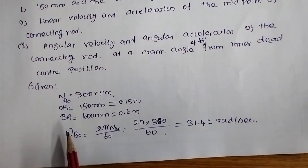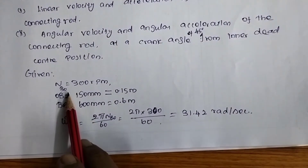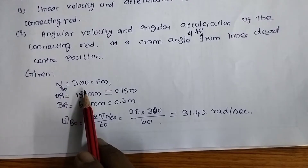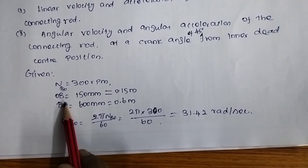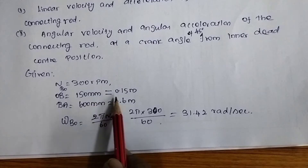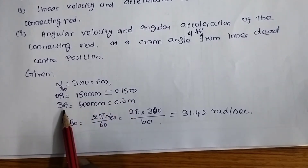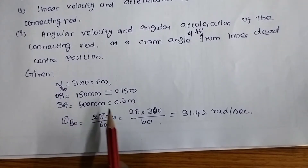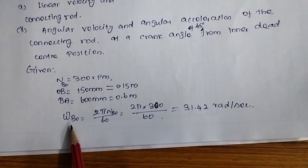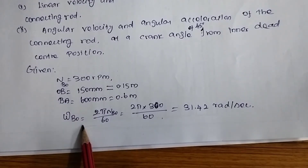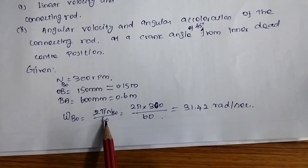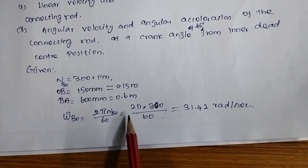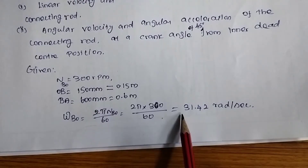Given data: NBO (crank speed) = 300 rpm. OB (crank length) = 150 mm = 0.15 m. BA (connecting rod length) = 600 mm = 0.6 m. The angular velocity omega is equal to 2π × N / 60 = 2π × 300 / 60 = 31.42 rad/s.